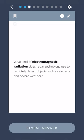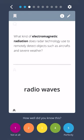What kind of electromagnetic radiation does radar technology use to remotely detect objects such as aircrafts in severe weather? Radio waves.